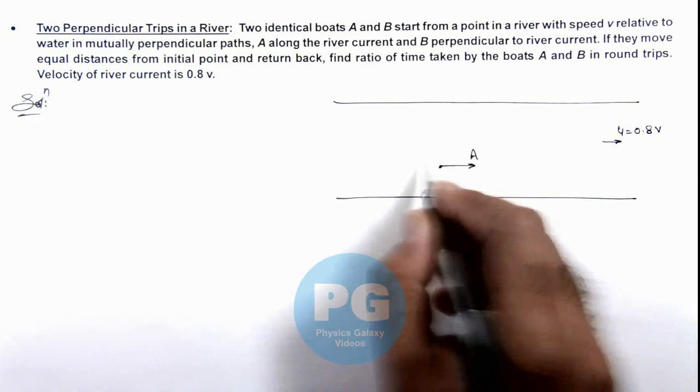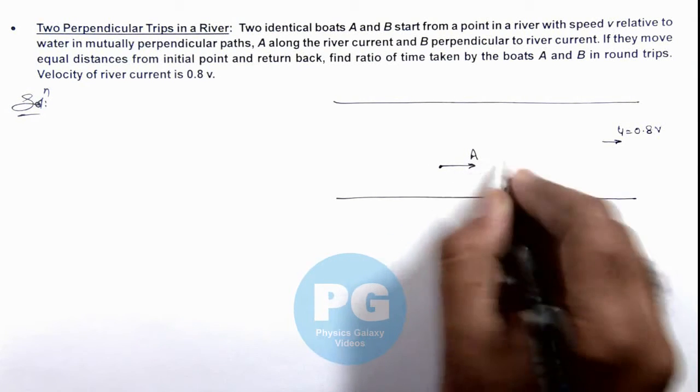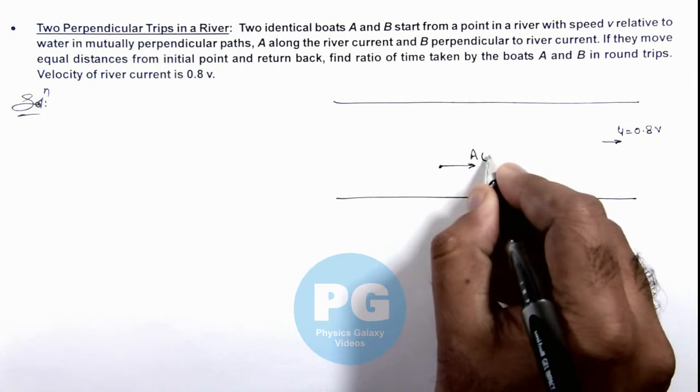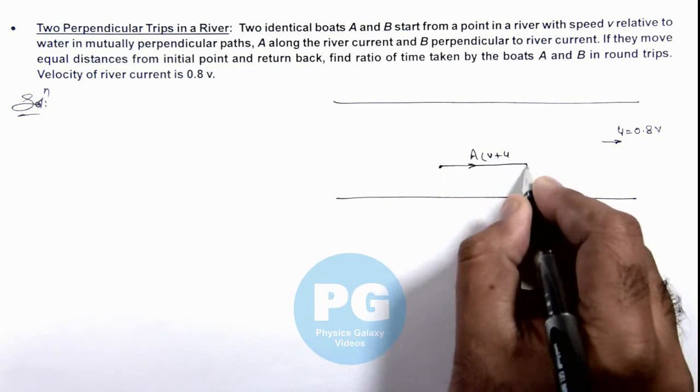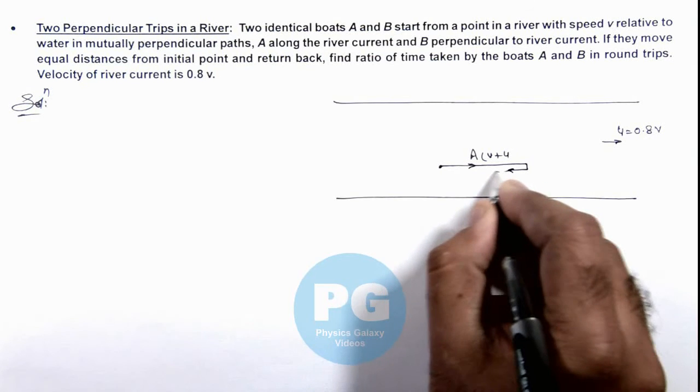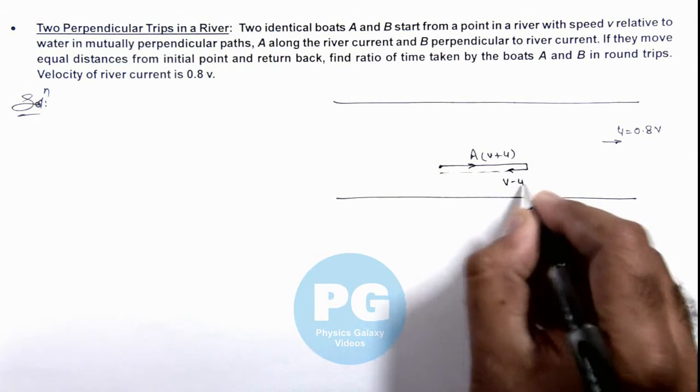So A will be moving with the speed v plus u. And after traveling some distance if it returns back, its speed with respect to ground will be v minus u, and it will come back.